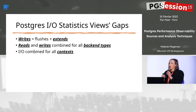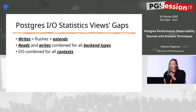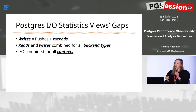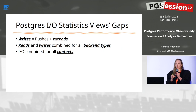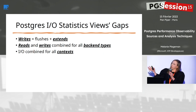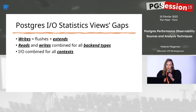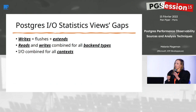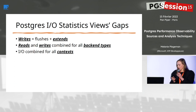Also, all backend types — client backends, auto-vacuum workers, checkpointer, and other auxiliary processes — have their IO combined, so you can't tell what IO is being done by which backend type. And all IO is combined across all contexts. We're going to talk about what I mean by context in a minute, but it relates to different types of buffers.